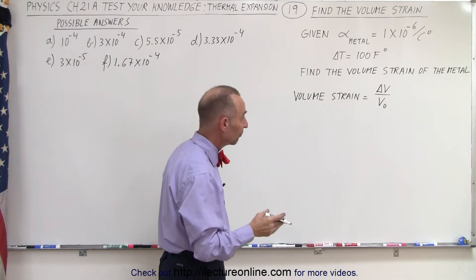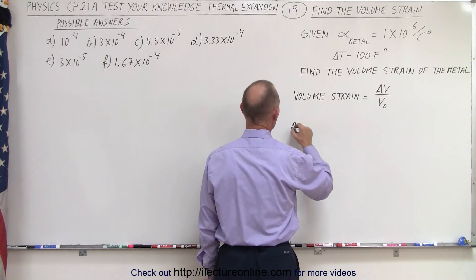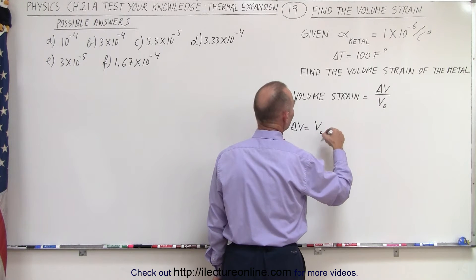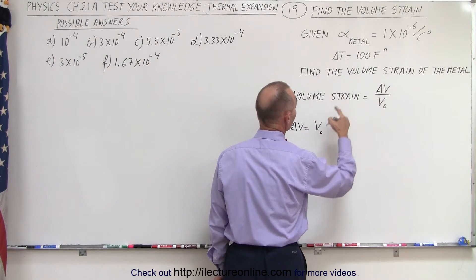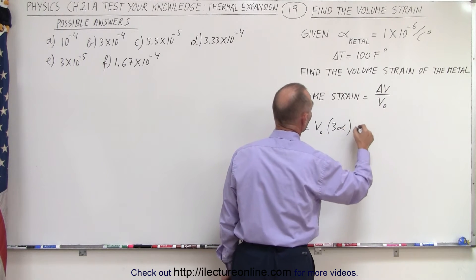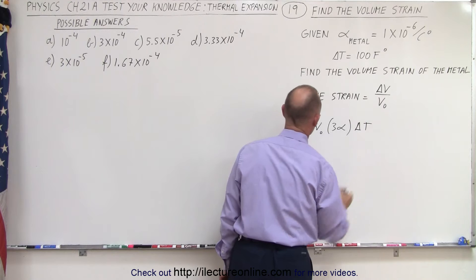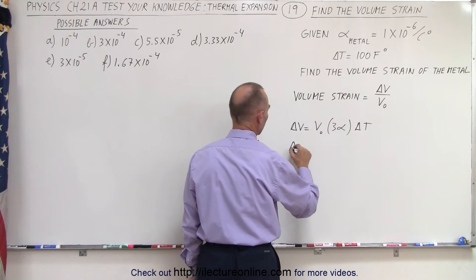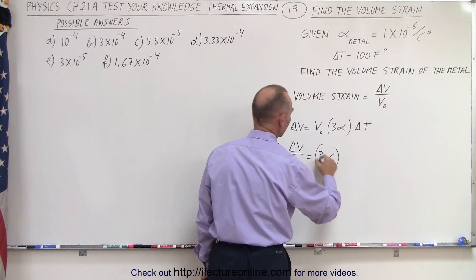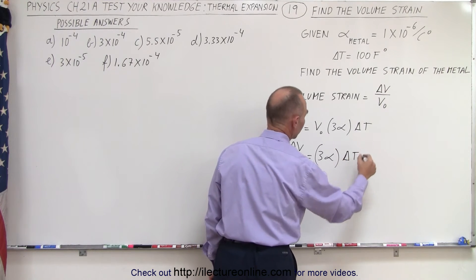Now how do we find the change in the volume? Well, the change in the volume is equal to the original volume times the volume coefficient of expansion. In this case it will be three times the linear coefficient of expansion times the change in the temperature. And so therefore the change in the volume over the original volume would be equal to three times the linear coefficient of expansion times the change in the temperature.